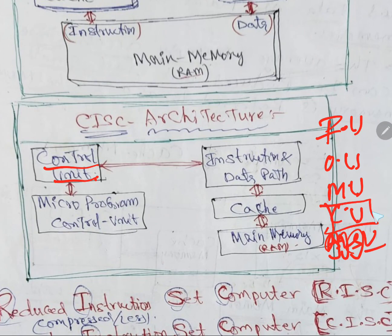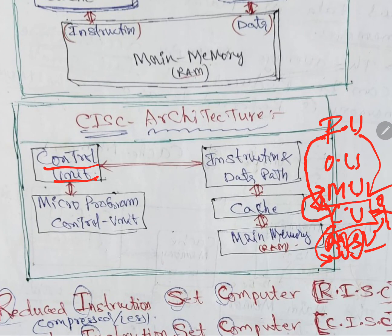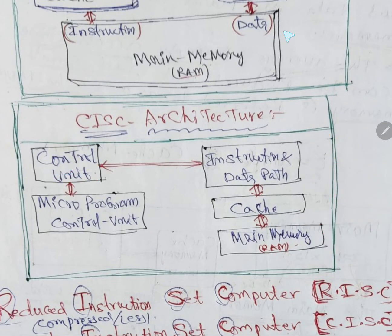The Control Unit will control everything just like a traffic police. If any data or instructions are coming from an input device — how to perform an operation — if there is any calculation part, it will send it to the ALU. If you want to see on the monitor, it will send it to the output unit. If you want to store, it goes to the memory unit. In CISC architecture, we have a Micro-program Control Unit — micro programs, meaning minute programs, are used to design the control unit.